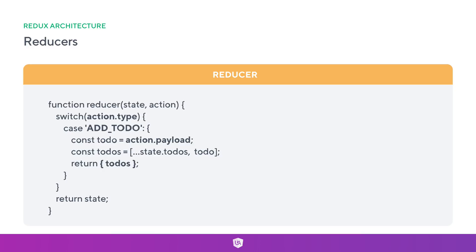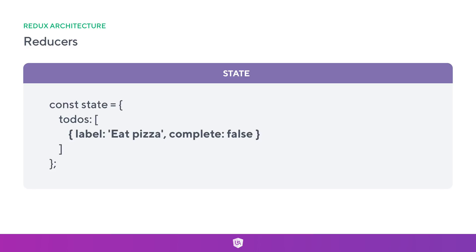We also have a return state at the bottom of the switch statement, for the case where no action type matches - we don't want to cause errors, so we just return the existing state. This is also a place to set up initial state. It's important to always return state so we can set up initial state and handle unmatched action types. Once finalized, we end up with a new state object where the todos property contains a label and complete property - one to-do added via our reducer.